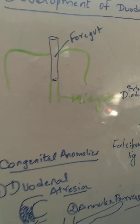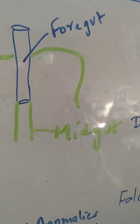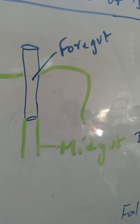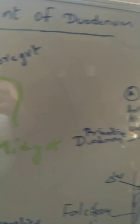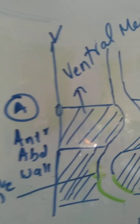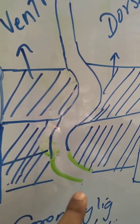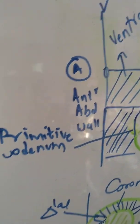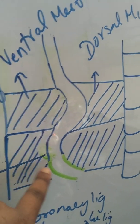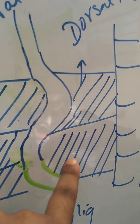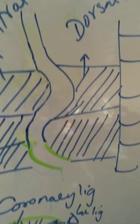The duodenum develops at the junction between the foregut and midgut — specifically the lower end of the foregut and the uppermost part of the midgut. At this junction, the common bile duct opens. The lower end of the foregut undergoes fusiform dilatation to form the stomach. This area becomes ventrally convex. The peritoneum in front of the primitive duodenum is called the ventral meso duodenum, and the peritoneum behind it is called the dorsal meso duodenum. Similarly, with respect to the stomach, there is a ventral and dorsal mesogastrium.